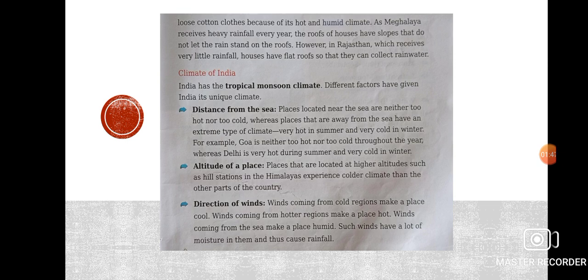All the states situated in the northern part of our country experience very hot summers and very cold winters. Whereas the places that are located near the sea have a moderate type of climate — that is not too cold, not too hot.